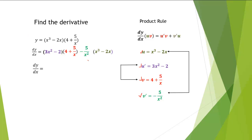Now we'll remove the parentheses and distribute. Among our first term, we'll distribute 3x squared. So we have 3x squared times 4, which is 12x squared. We'll multiply 3x squared times 5 over x, which gives us 15x. Next, we'll multiply negative 2 times 4, which is negative 8. We'll also multiply negative 2 times 5 over x, which gives us negative 10 over x.